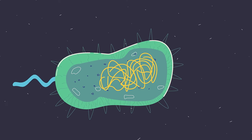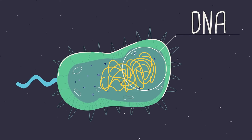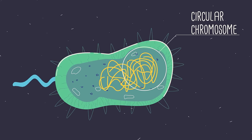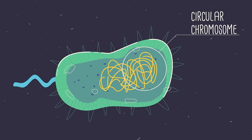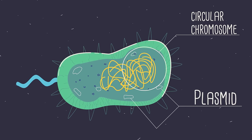but instead have one main circle of DNA called the circular chromosome, and lots of tiny circles of DNA called plasmids.